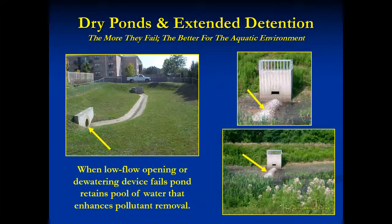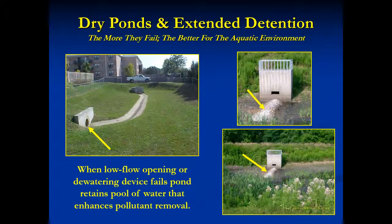Dry ponds and extended detention type ponds don't hold a pool of water. Dry ponds trap zero pollutants. Extended detention ponds might trap 5 to 25% of the pollutants transported into them. However, both may fail in ways that cause the retention of water, which enhances pollutant removal. But failures can be dangerous. It's better to retrofit these ponds so they can safely store a permanent pool of water.